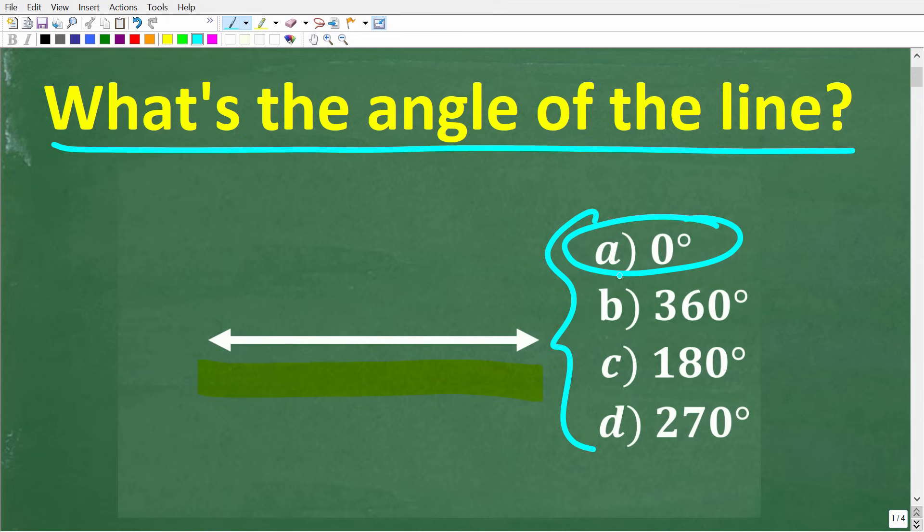So A is zero degrees, B is 360 degrees, C is 180 degrees, and D is 270 degrees.